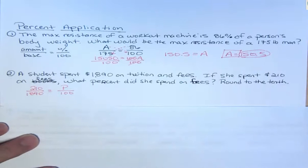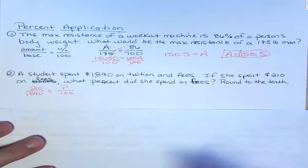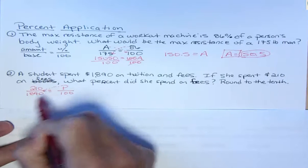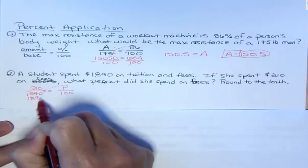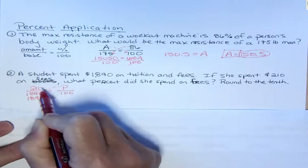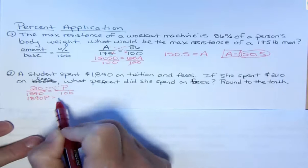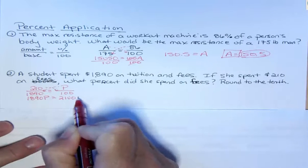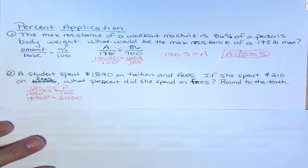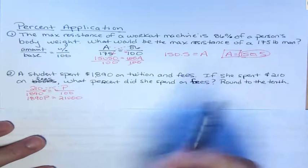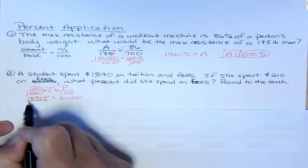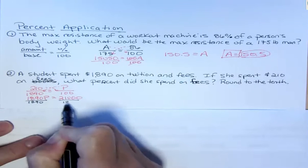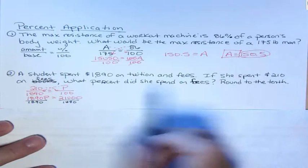And now we're going to cross multiply. And these I can do without a calculator. I know that I have $1,890p when I multiply those two. And when I multiply 210 times 100, I just have to add two zeros. But feel free to use your calculator if that would make you more comfortable. And then we're going to divide both sides by $1,890.